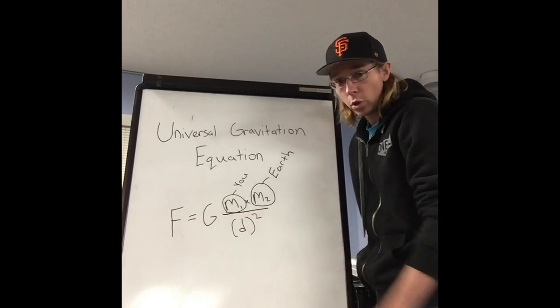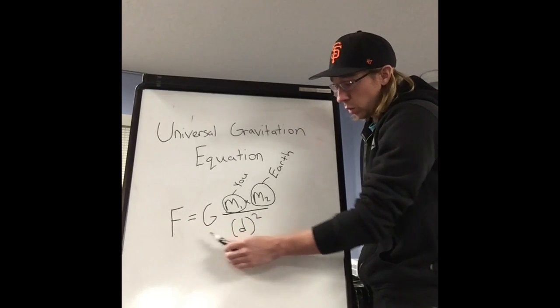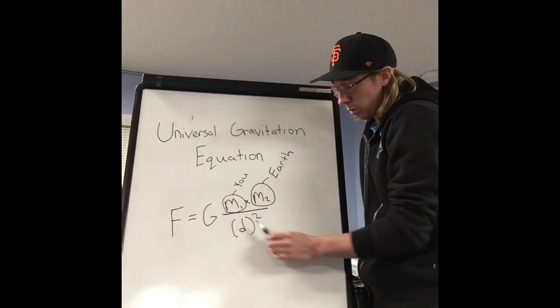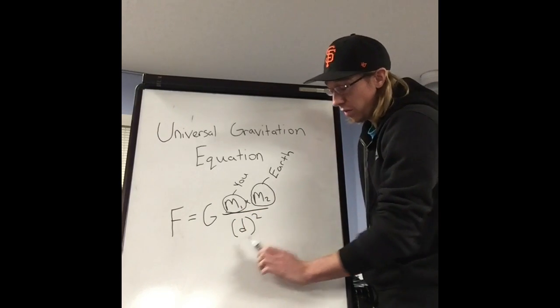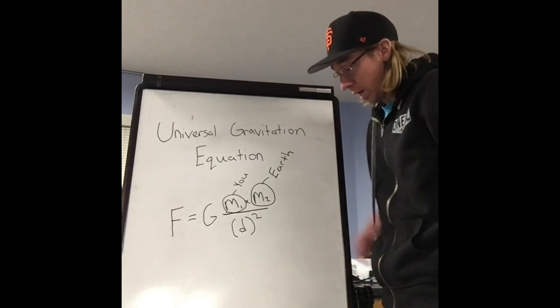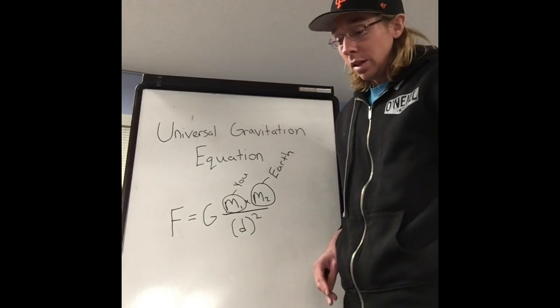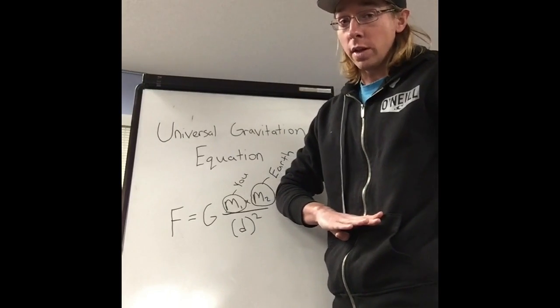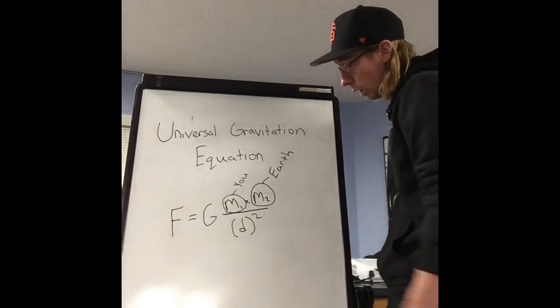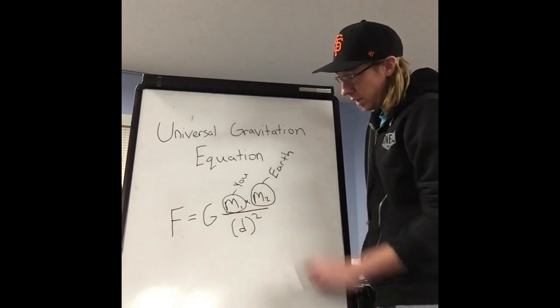So to calculate the gravitational force of you on Earth, you would do F equals the constant G times your mass multiplied by the Earth's mass divided by the distance squared. And distance squared is the distance between the center of you and the center of Earth. Okay, so that is the equation.